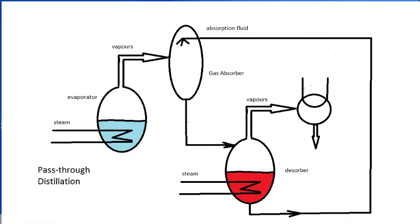A direct contact condenser is a special instance of another device, a gas absorber. Gas absorption is a powerful separation technology normally used to selectively absorb certain components and not others from a gaseous mixture. For our present purposes, we will consider only systems in which the liquid absorbs all of the vapors entering the absorber.